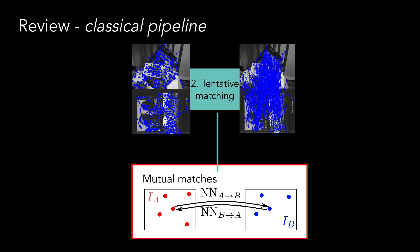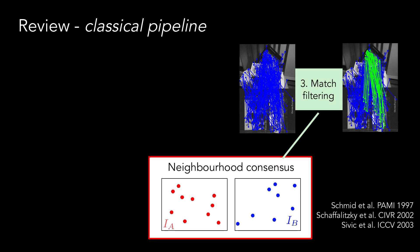Additional constraints, such as mutual nearest neighbors, can be used to reduce the fraction of incorrect matches. In a third stage, additional global or local constraints can be used to further prune the incorrect matches.